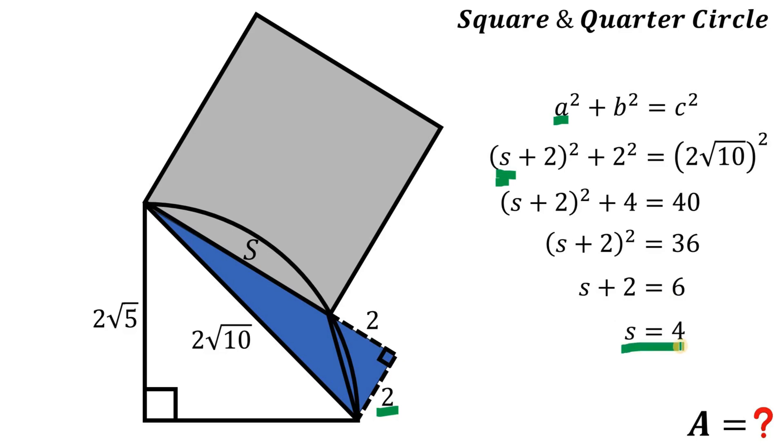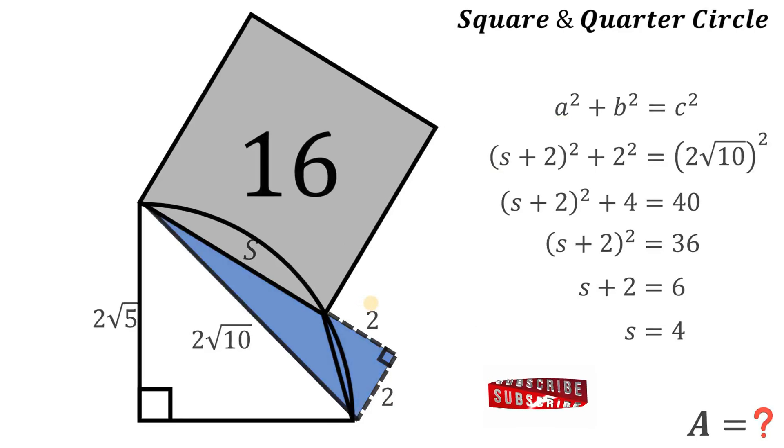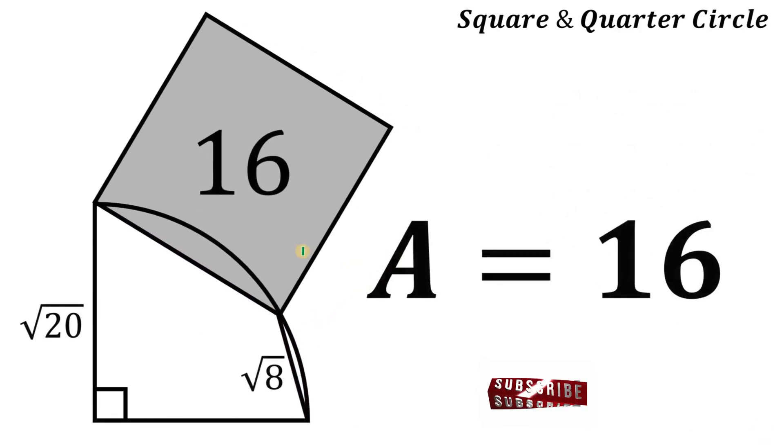Now we know s equals 4, so s squared is equivalent to 16, and that is the area of this square. Therefore, given this figure, the area of this square is simply equivalent to 16 square units. And as always, we are done.